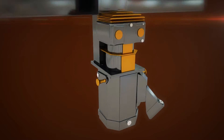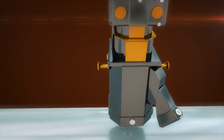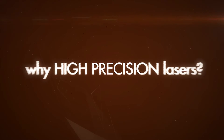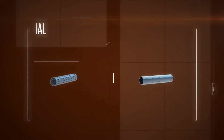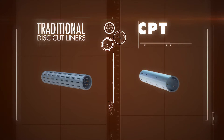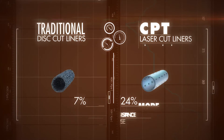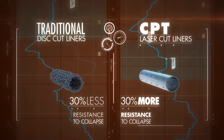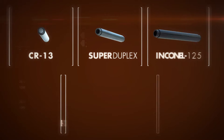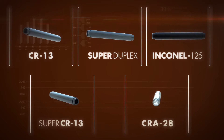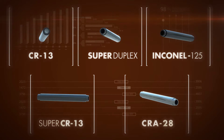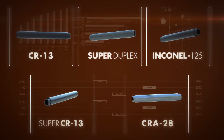Our high-precision lasers are each worth millions of dollars and are managed by software tools that ensure the highest performance. Why high-precision lasers? They prevent collapse by maintaining the tube's original mechanical properties — this is key for deeper or higher pressure wells. The choices of metal are far greater.